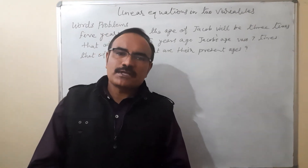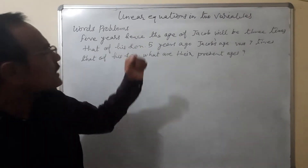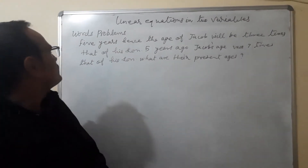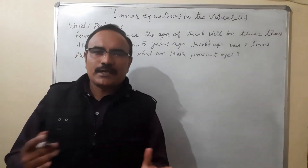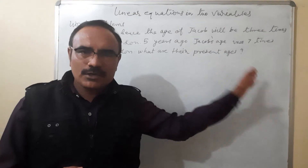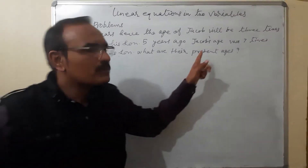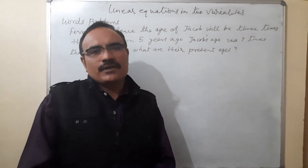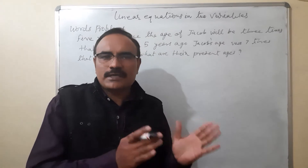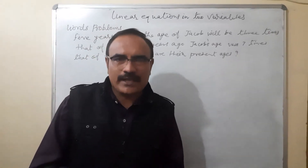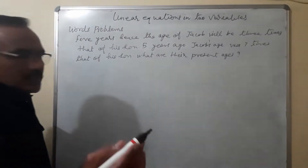In these types of questions, first of all we have to divide the question into parts. The first part is: 5 years hence the age of Jacob will be 3 times. We will read the question properly and look at the last line that says what are their present ages. That means we will consider the present age of the father as x years and the present age of his son as y years, then arrange them in equation form.